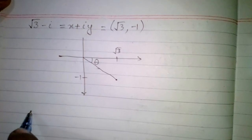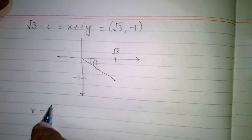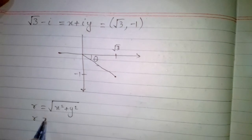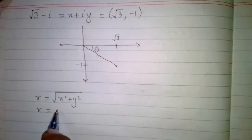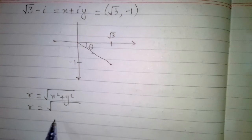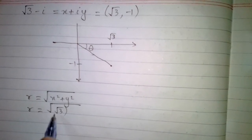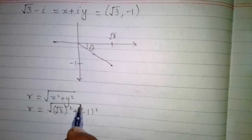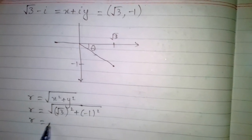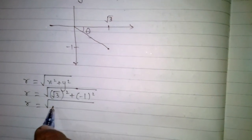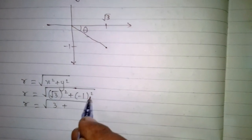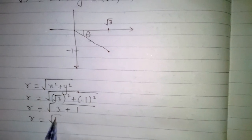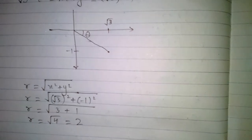First, we will find the modulus of the complex number, which is r = √(x² + y²). So r = √((√3)² + (−1)²) = √(3 + 1) = √4, which equals 2.